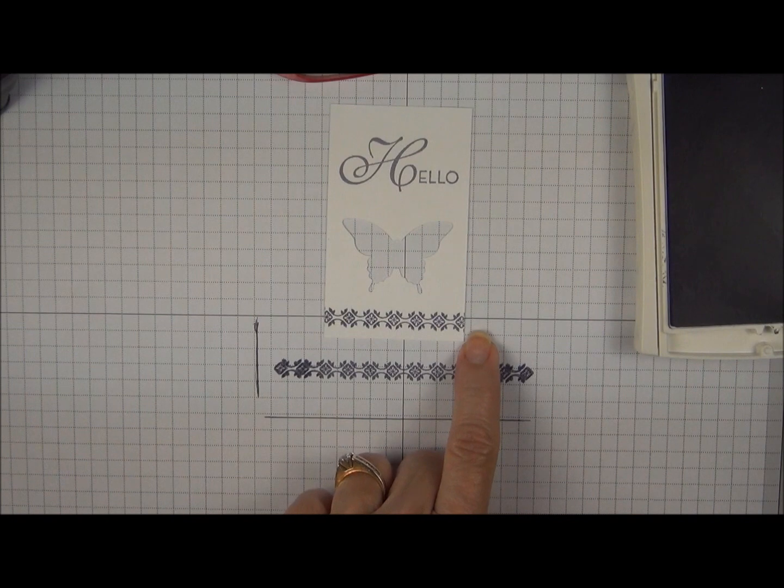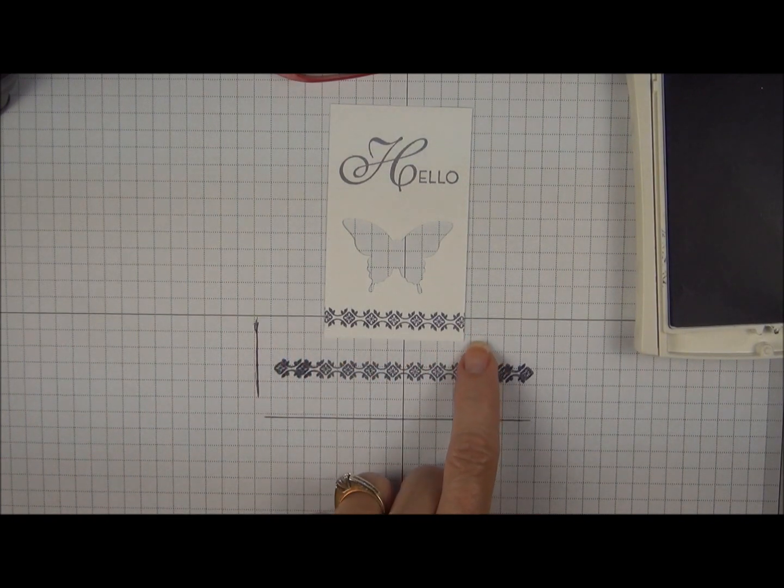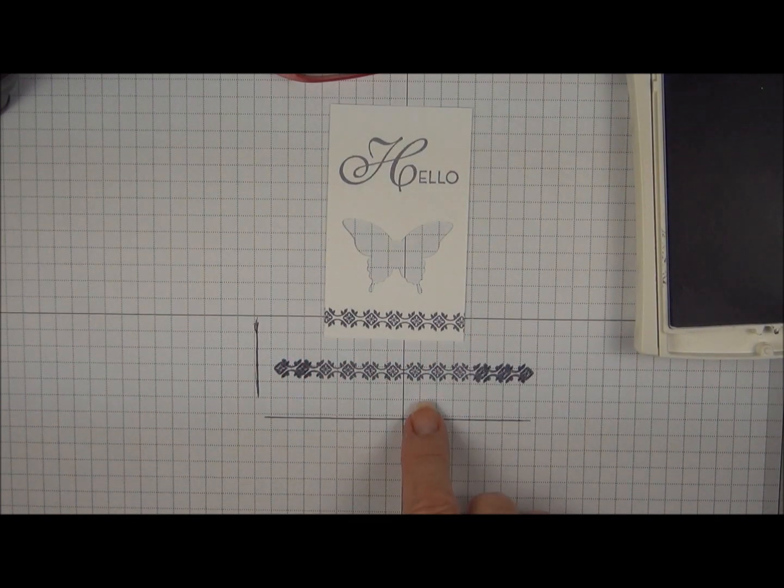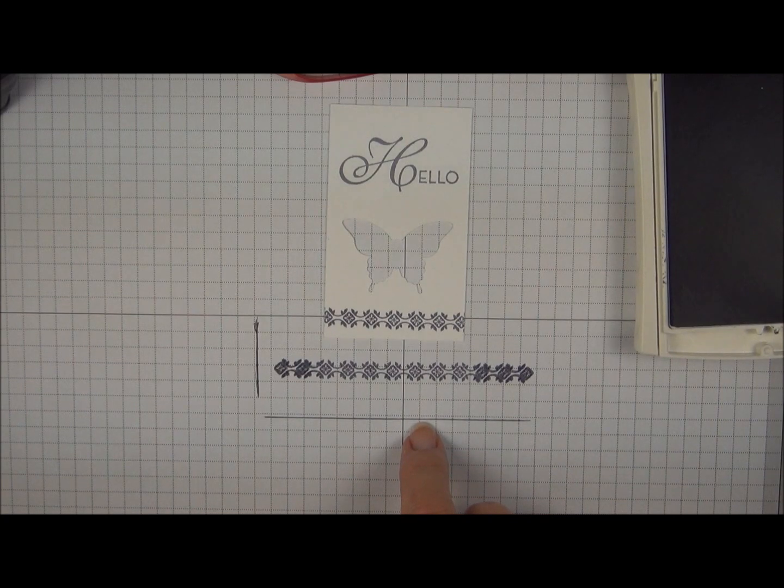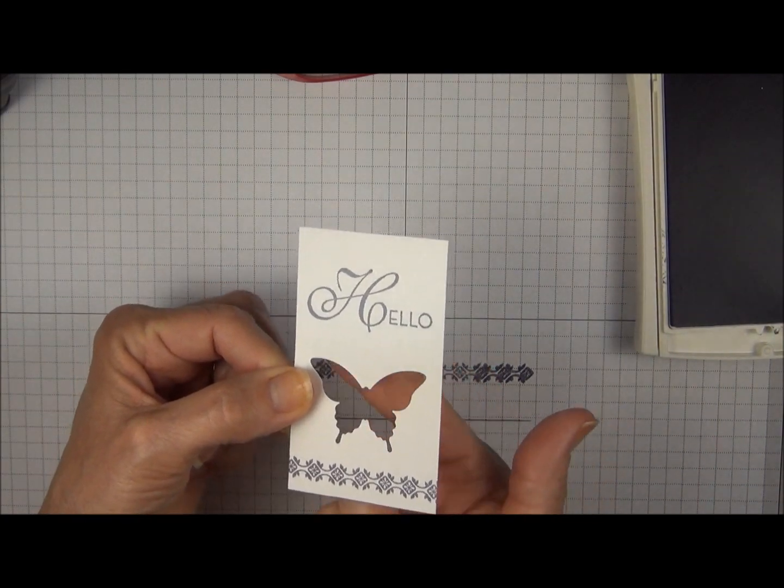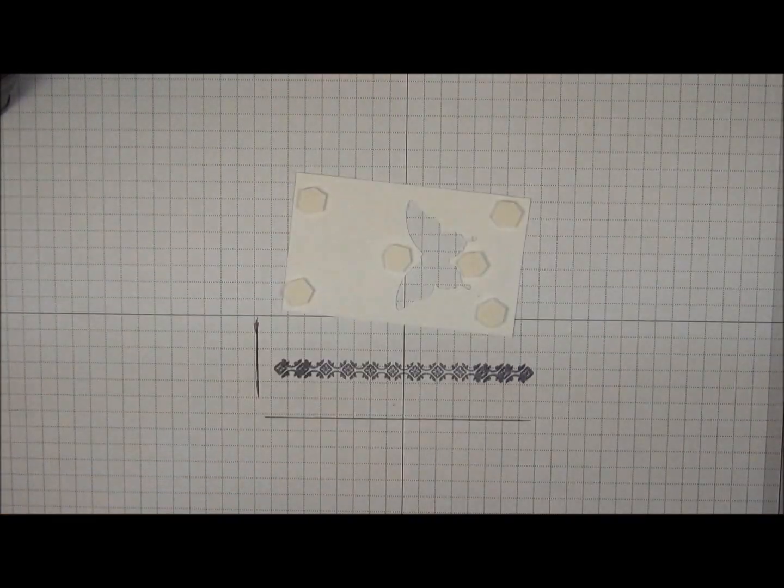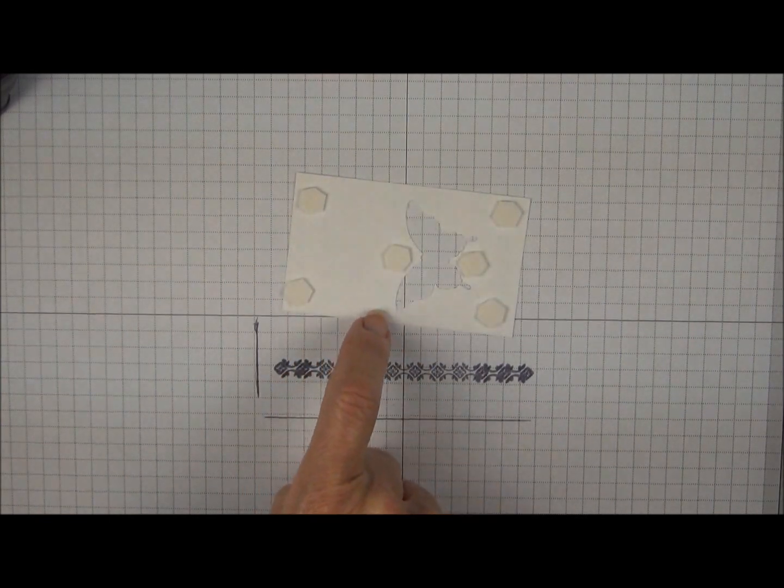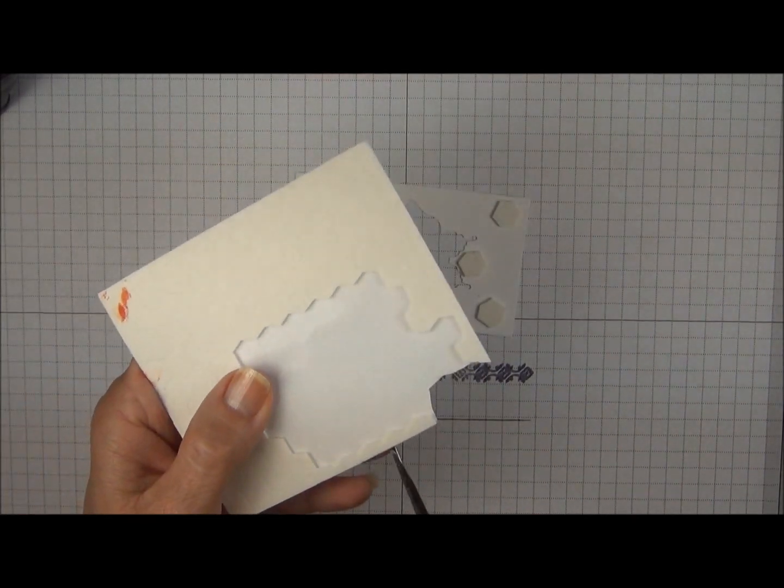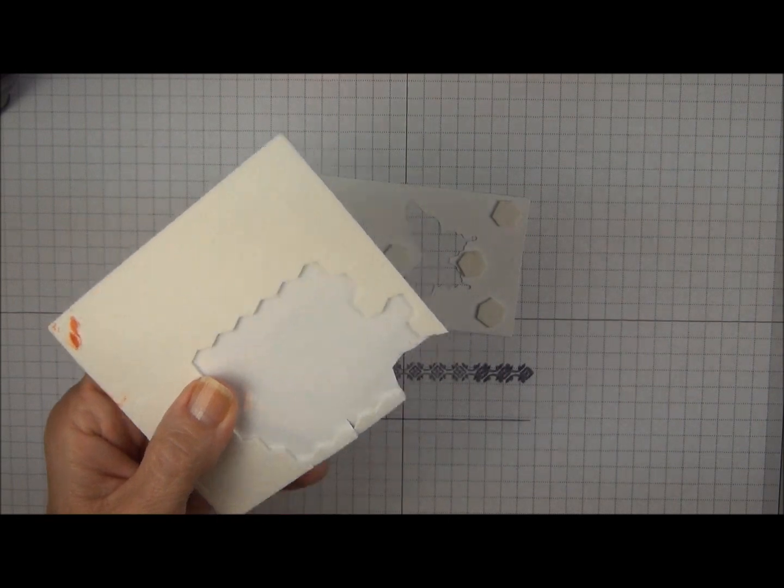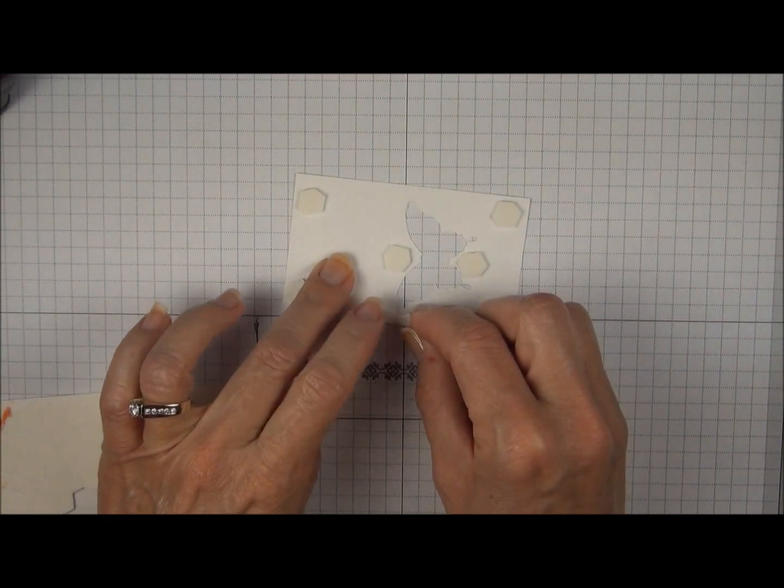So you can see it's fairly even on the left side and the right side. So it's an easy way to use your grid paper as a stamp-a-ma-jig. So now we can add dimensionals underneath and then I also want to have one in the middle here. I'm just going to snip a couple of those and then that will fit right in there.